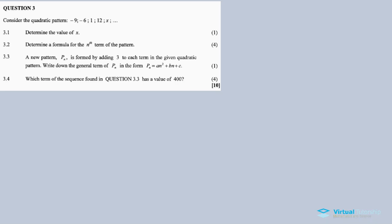Back with another one — Question 3 is a quadratic number pattern. In the description box of this video are links for other videos for this November 2016 question paper. We're going to discuss this quadratic pattern question, Question 3. Consider the quadratic pattern: -9, -6, 1, 12, X, and so on. For 3.1, we need to work through this quadratic pattern — for quadratic patterns you need the second common difference.